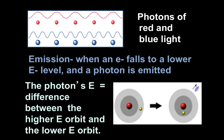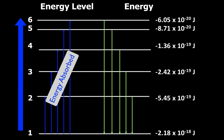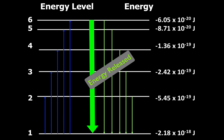The picture at the top shows photons of red and blue light. Notice that the red light has a long wavelength — long wavelength means low energy. The blue light has a shorter wavelength; the shorter the wavelength, the greater the energy. The emission of light occurs when an electron falls to a lower energy level and a photon is emitted. The photon's energy is equal to the difference between the higher energy orbit and the lower energy orbit. The emission of light is fundamentally related to the behavior of electrons. When you see the various colors produced by fireworks, those colors are caused by electrons dropping down to lower energy levels.